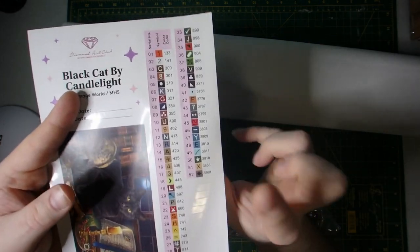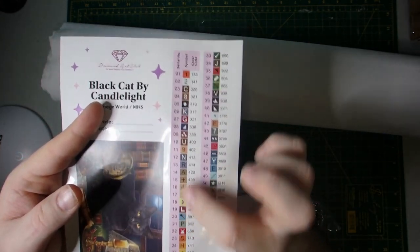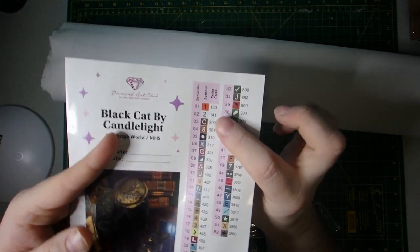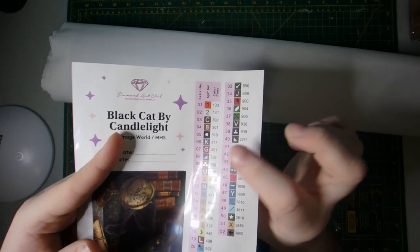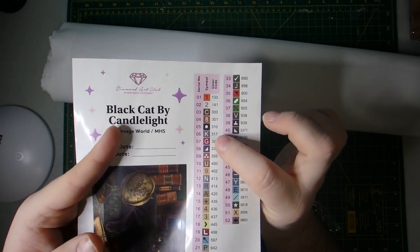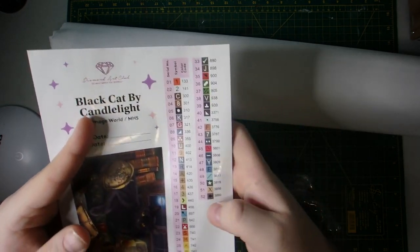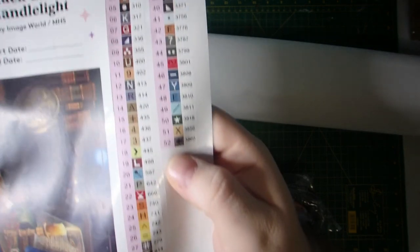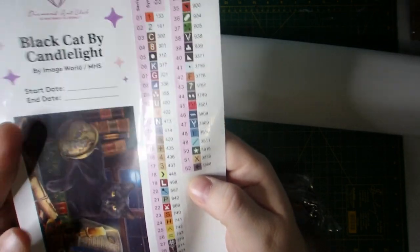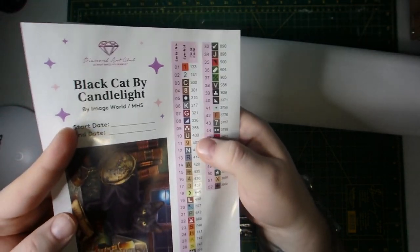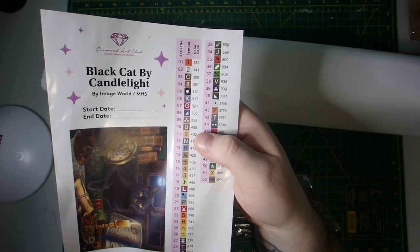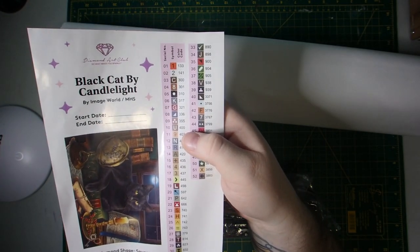This is great for a log book or just kind of keeping track. Once again, you have your supplies. And then it has all of your Kitting Up stickers here, which gives you the amount of colors, the symbol they're using and the DMC number that they use for the drills. And this kit has 52 colors. And with Diamond Art Club, anything that's above 150 in their color code is considered an AB.